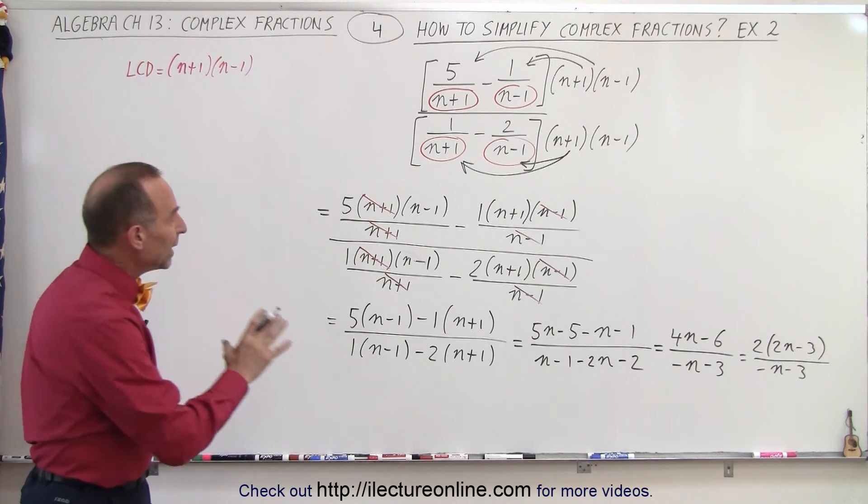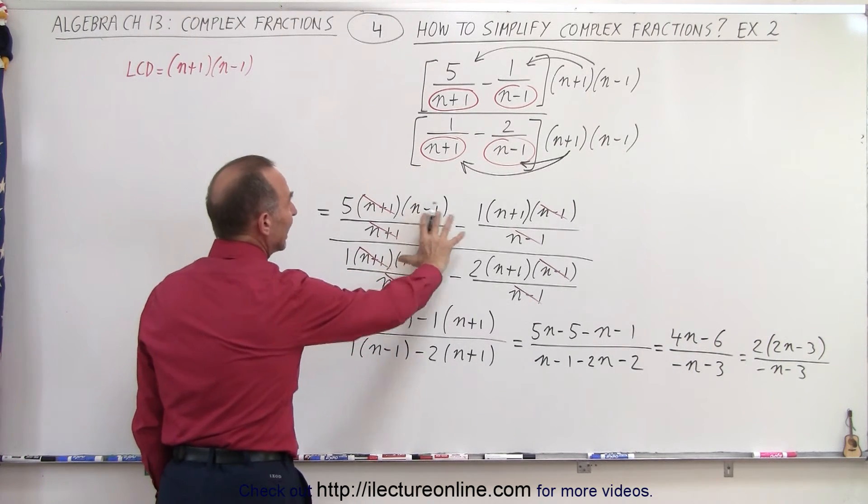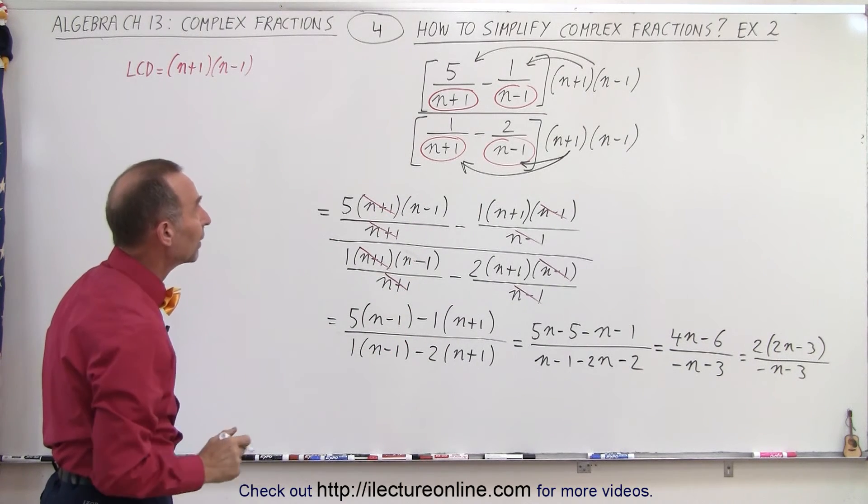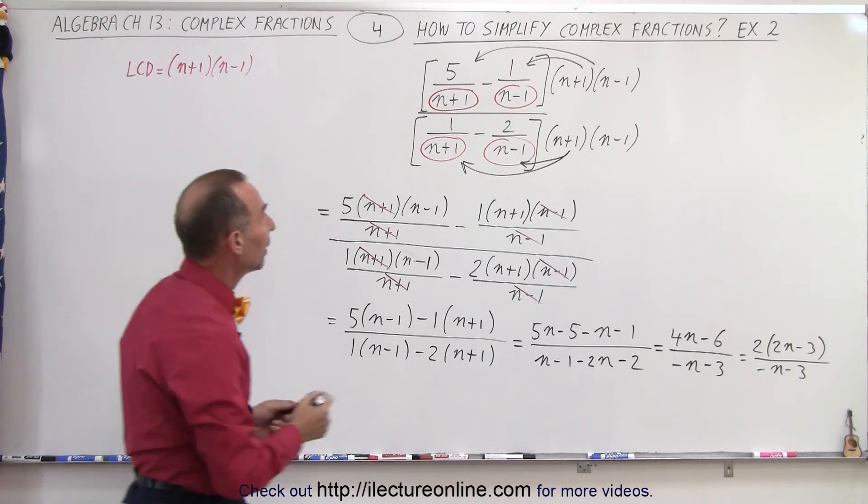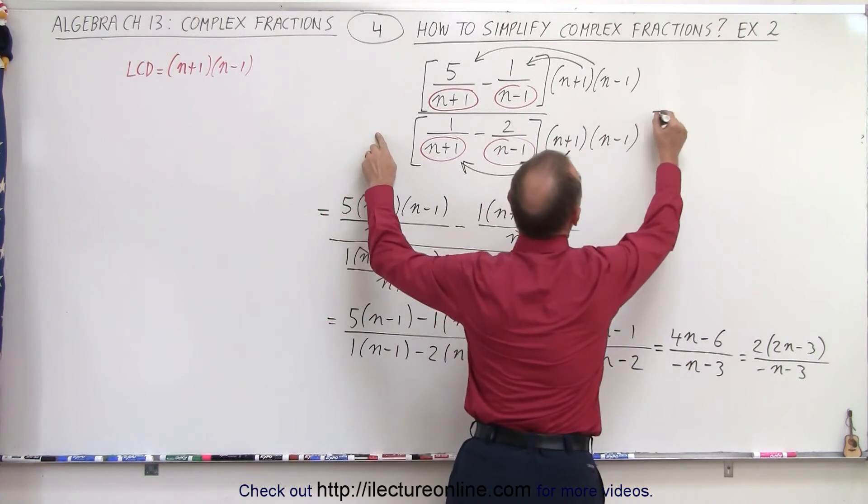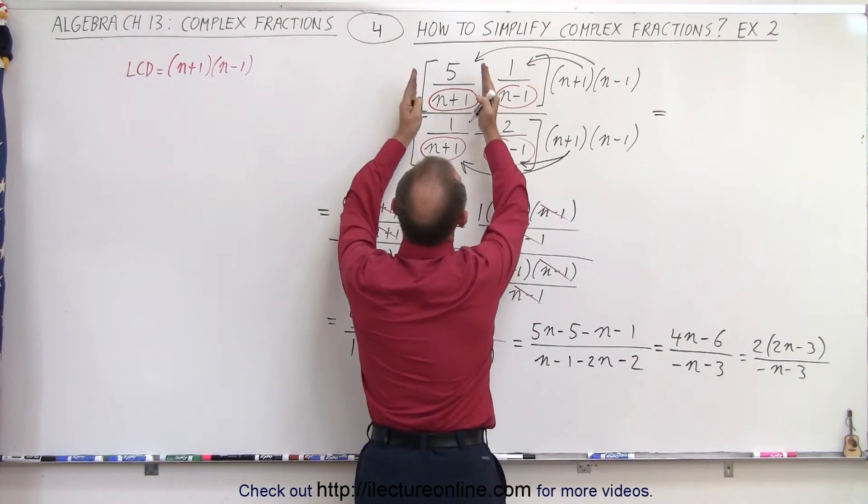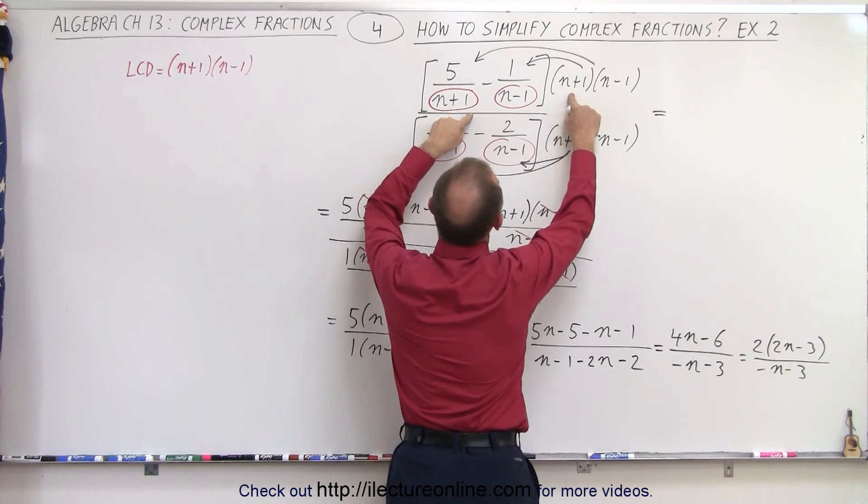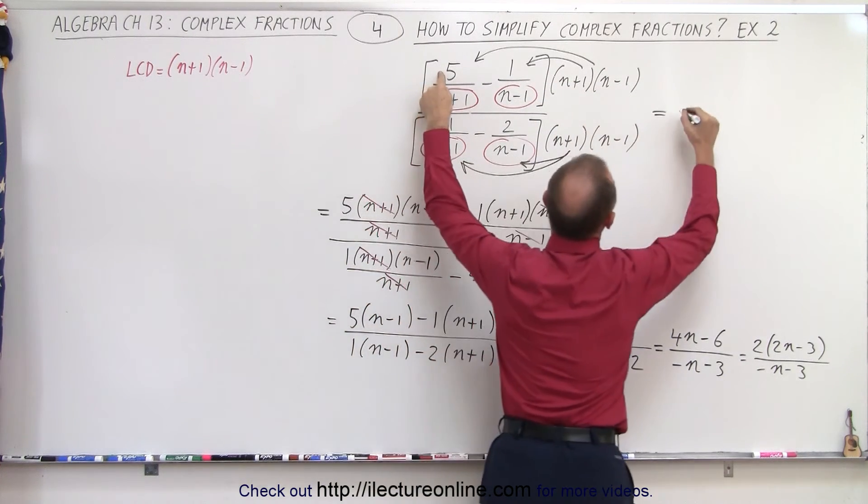Now notice, we really didn't need to put this step in here. I mean, if it helps, and you can see how to cancel things, by all means go ahead and do that. Sometimes we can simply look at this right here and write the following thing. We can say we're going to multiply this times this, and the n plus 1s cancel out, so we're left with 5 times n minus 1.